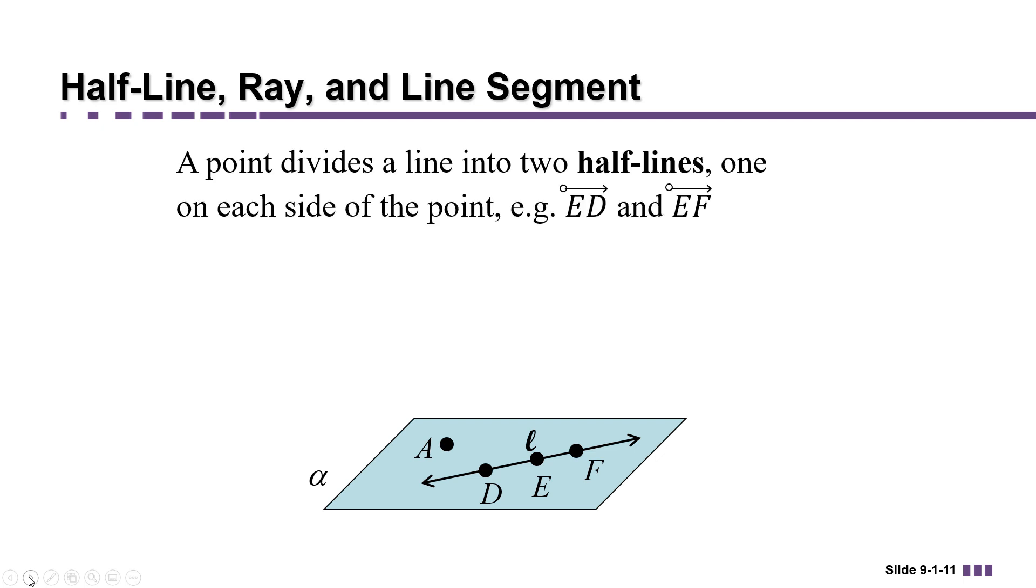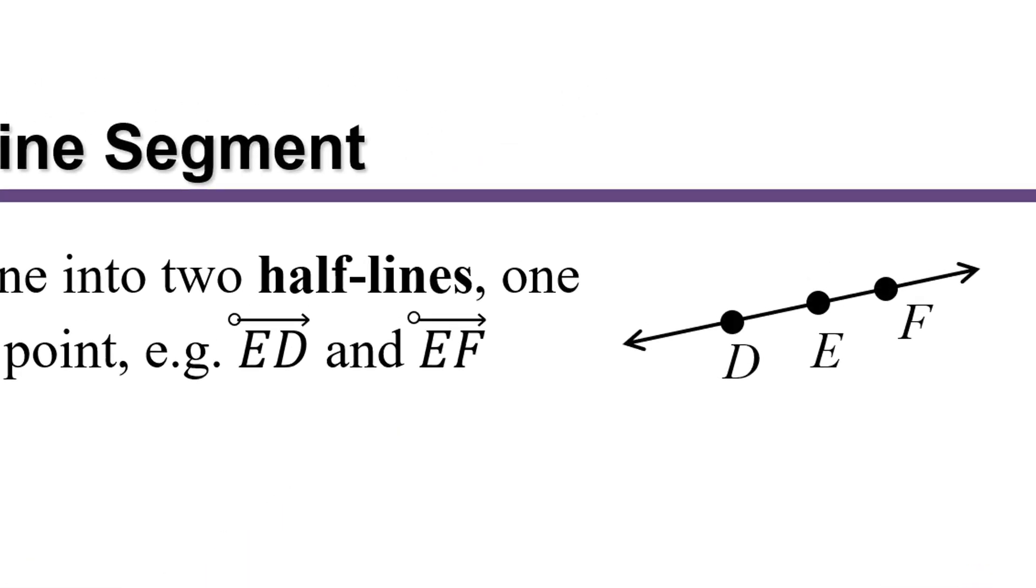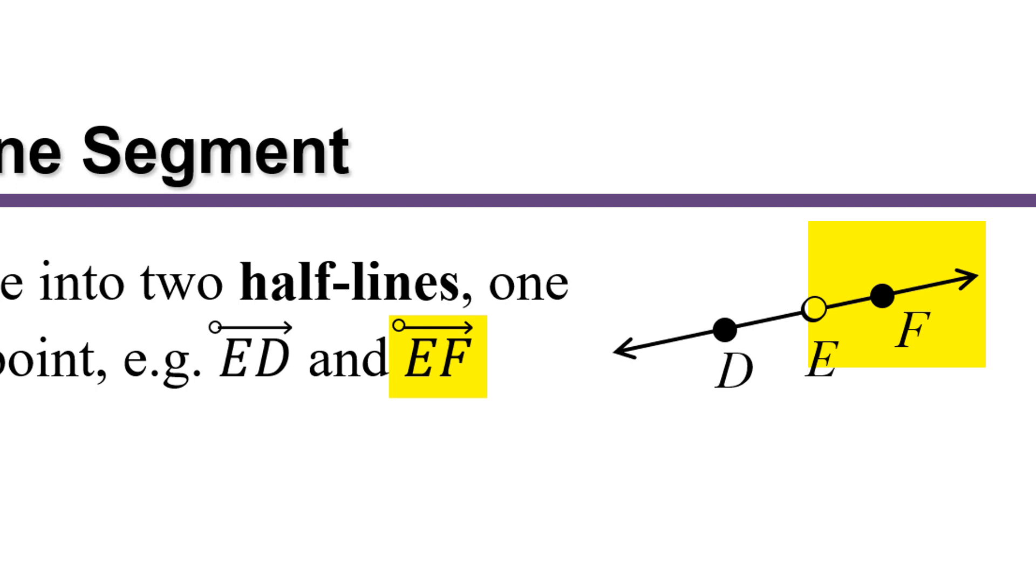For example, if you take the line through DEF and you remove the point E, you form two of what are called half lines. The half line starting at E and going to the right is called EF. The half line starting at E and going to the left is called ED.